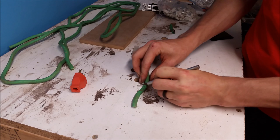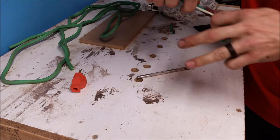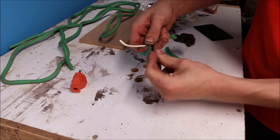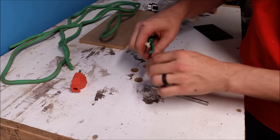So on the female plug, we're just going to strip back about 6 inches of casing and then we're going to strip each one of the wires about half an inch to expose the wires inside the insulation.